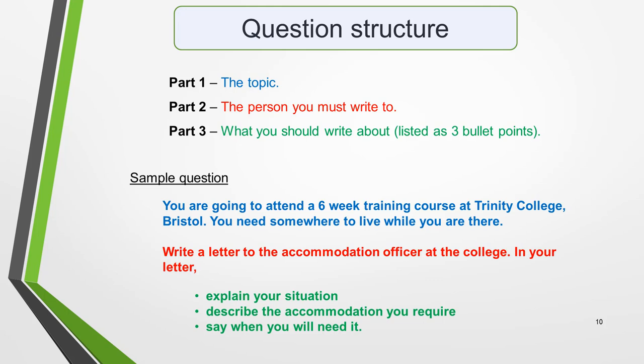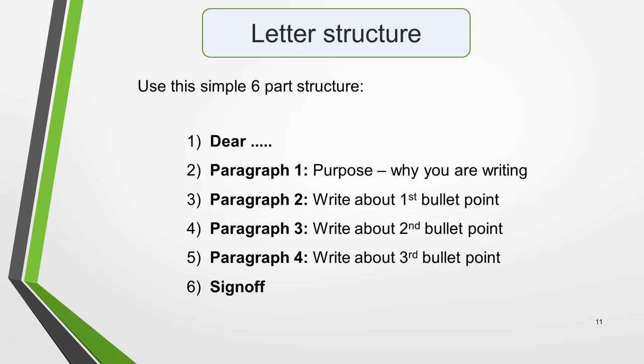The layout of your letter should essentially follow the structure of the question, and consist of four paragraphs with a greeting at the beginning and a sign-off at the end. Here's an easy-to-remember six-part structure: start with the greeting — 'Dear [whoever you're writing to]'. In paragraph 1, state the purpose of the letter, that is your reason for writing. In paragraph 2, write about bullet point 1. In paragraph 3, write about bullet point 2. In paragraph 4, write about bullet point 3. Then finally, sign off your letter.